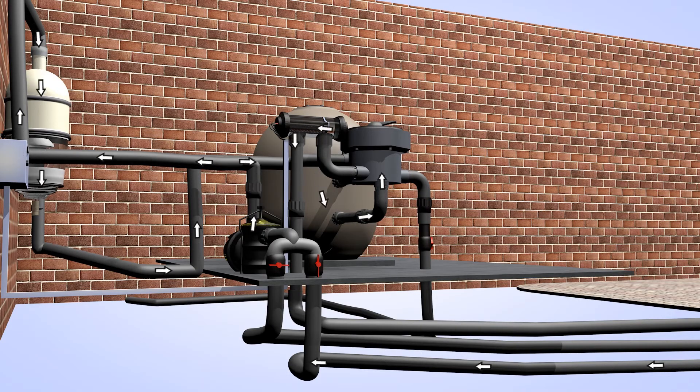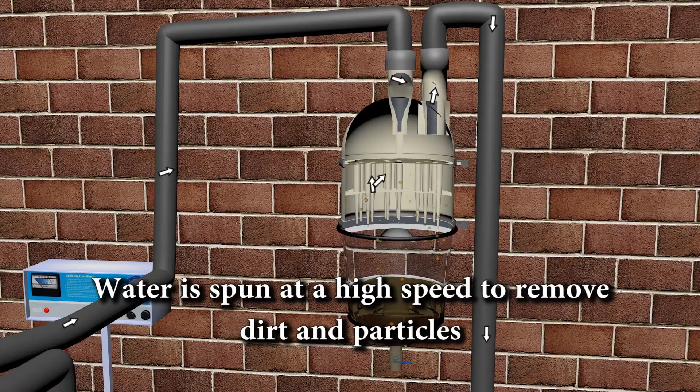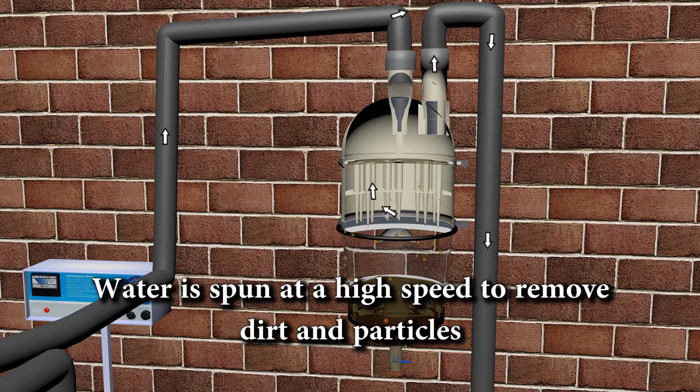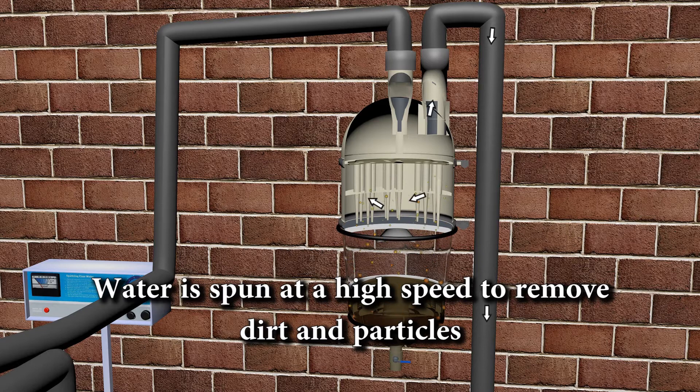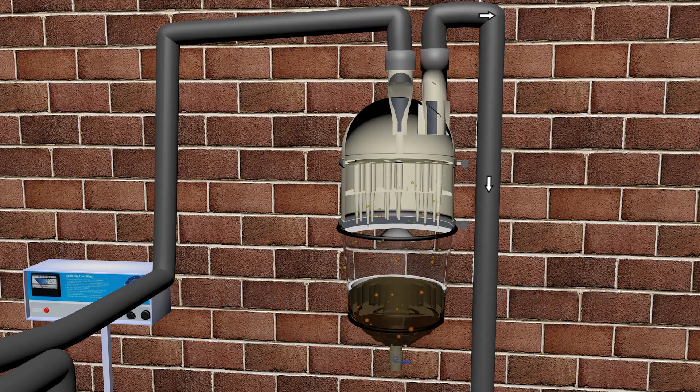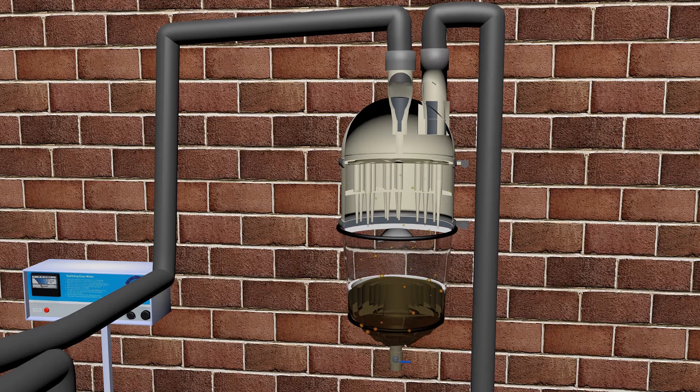As the water is suctioned from the pool by the pump, it is then diverted to travel through the Hydro Spin filter. This filter allows the water to spin and dirt and particles that would normally have ended up in the pool filter medium will be trapped in the Hydro Spin filter.